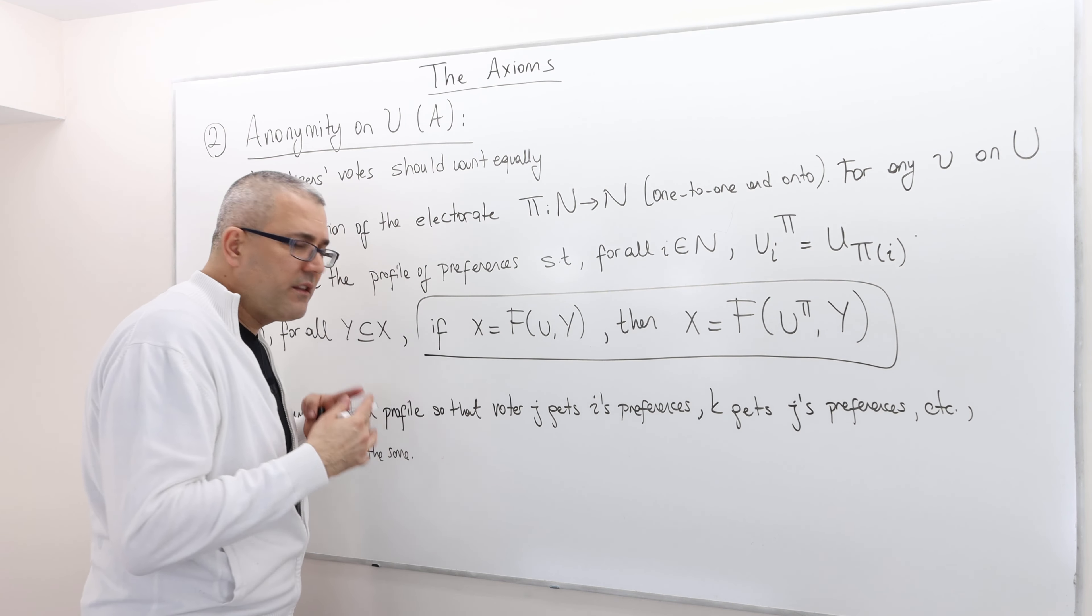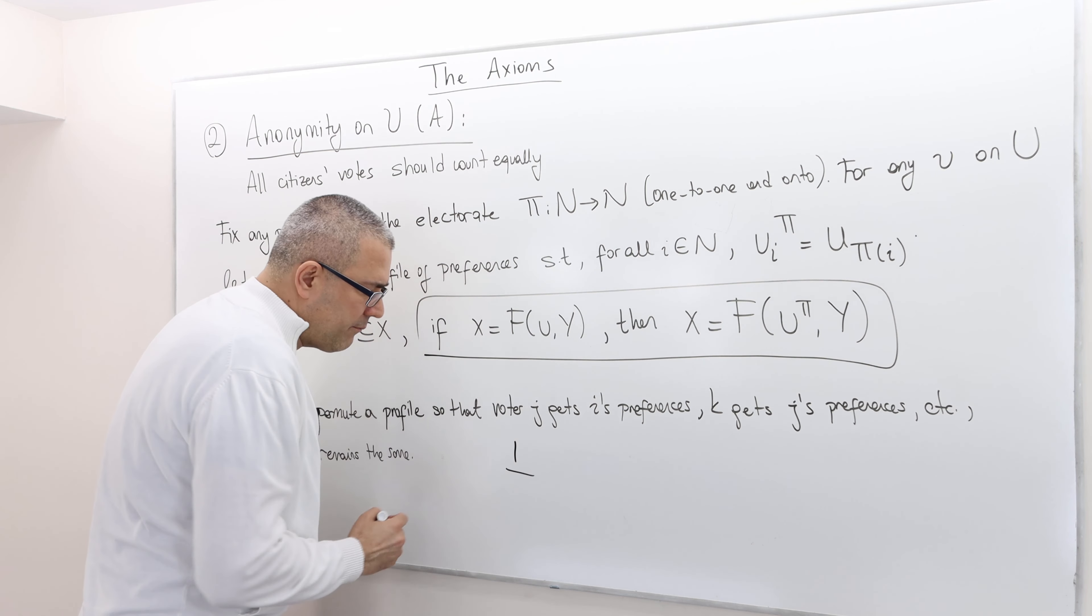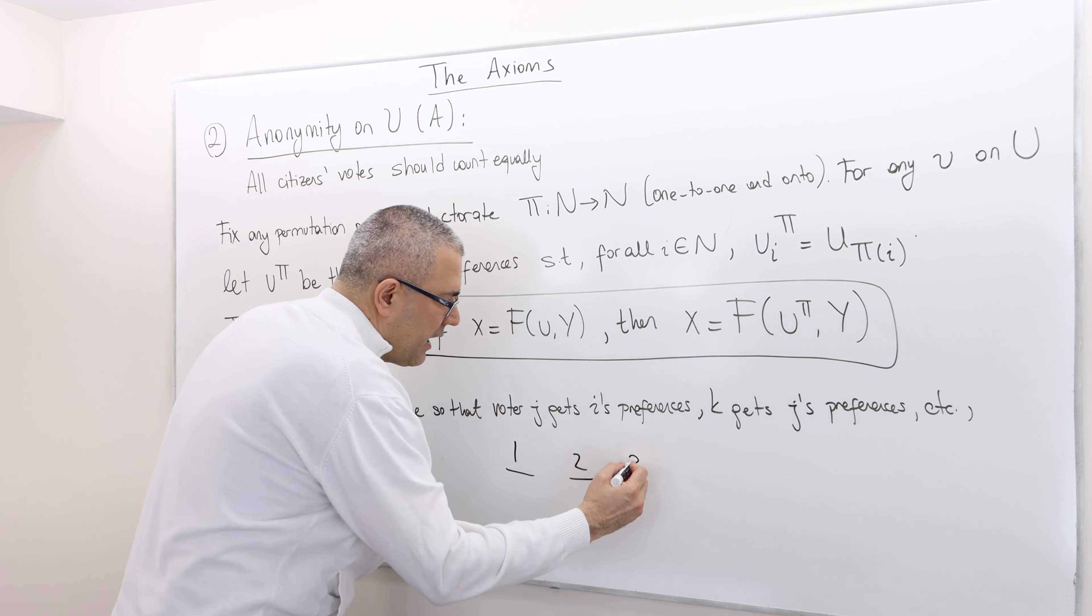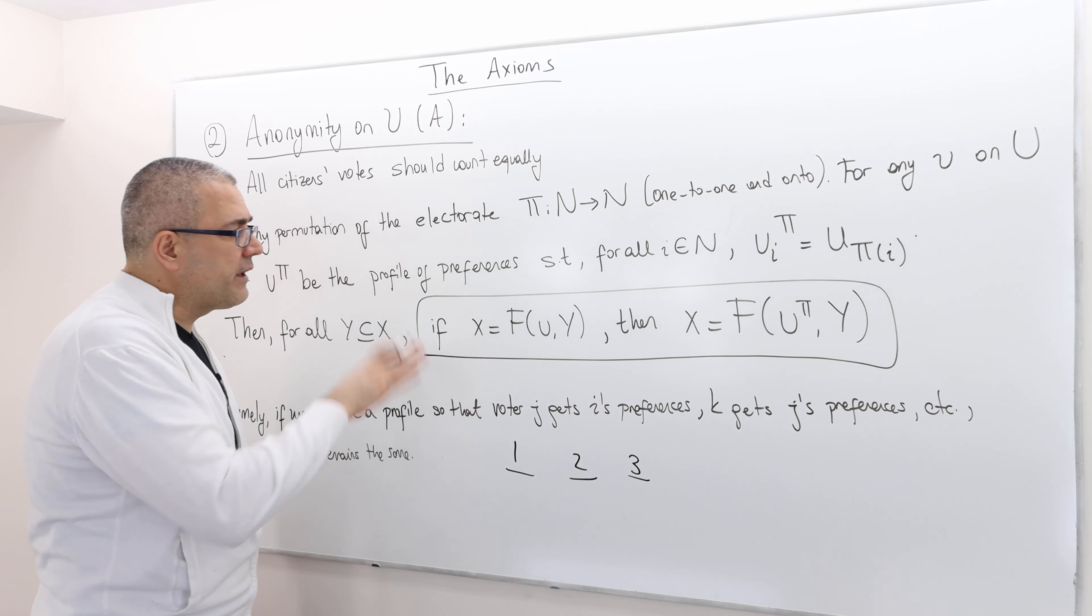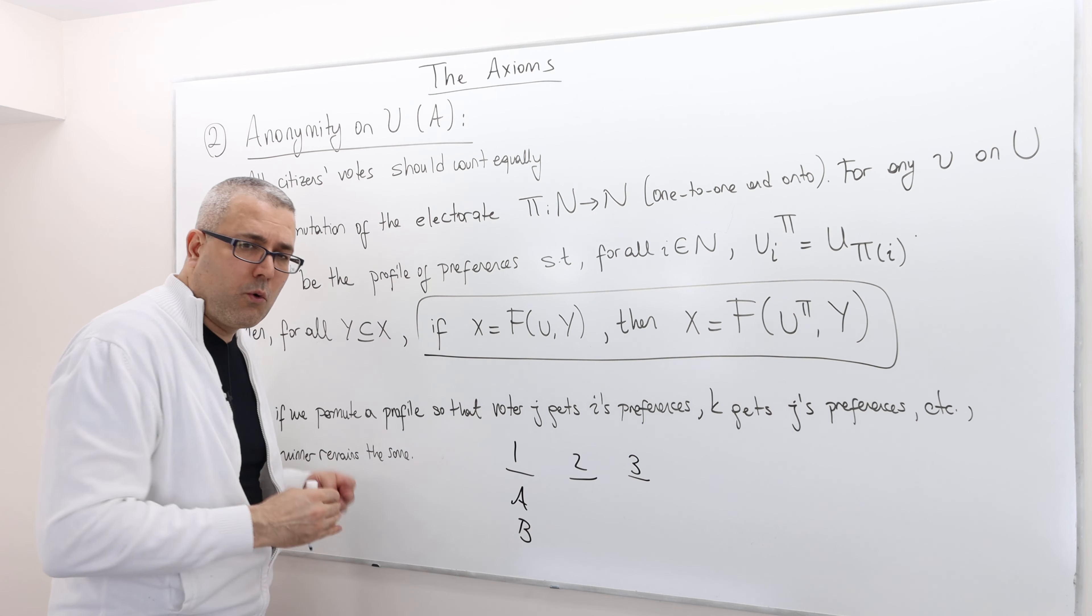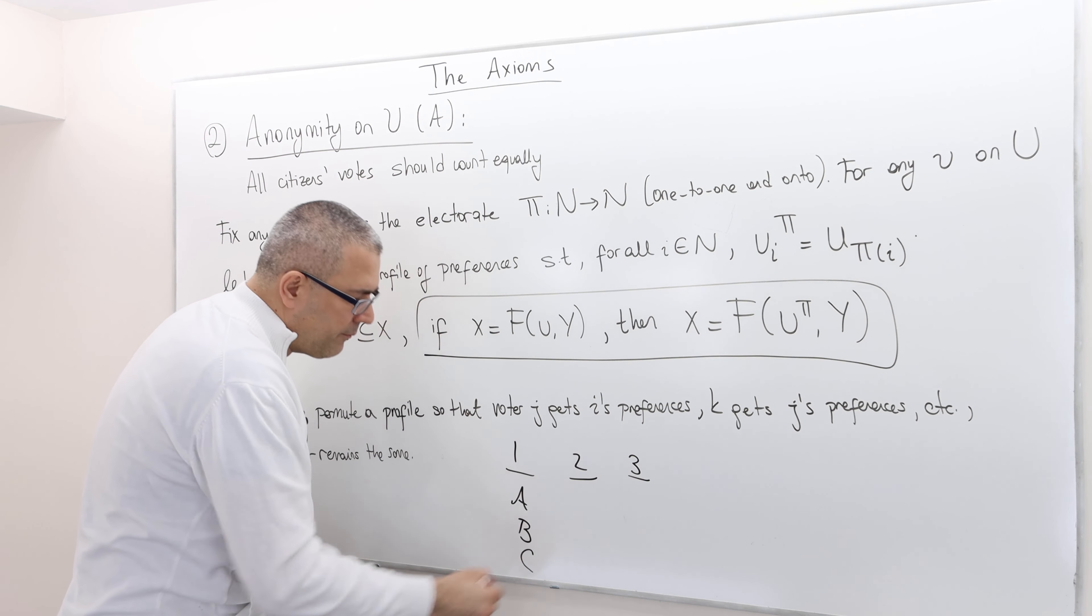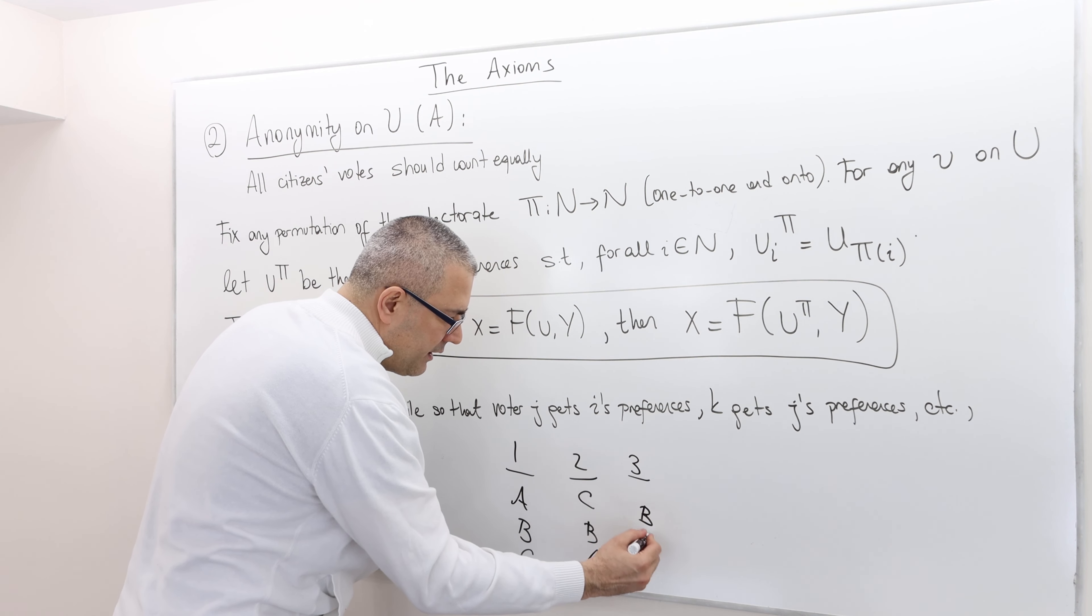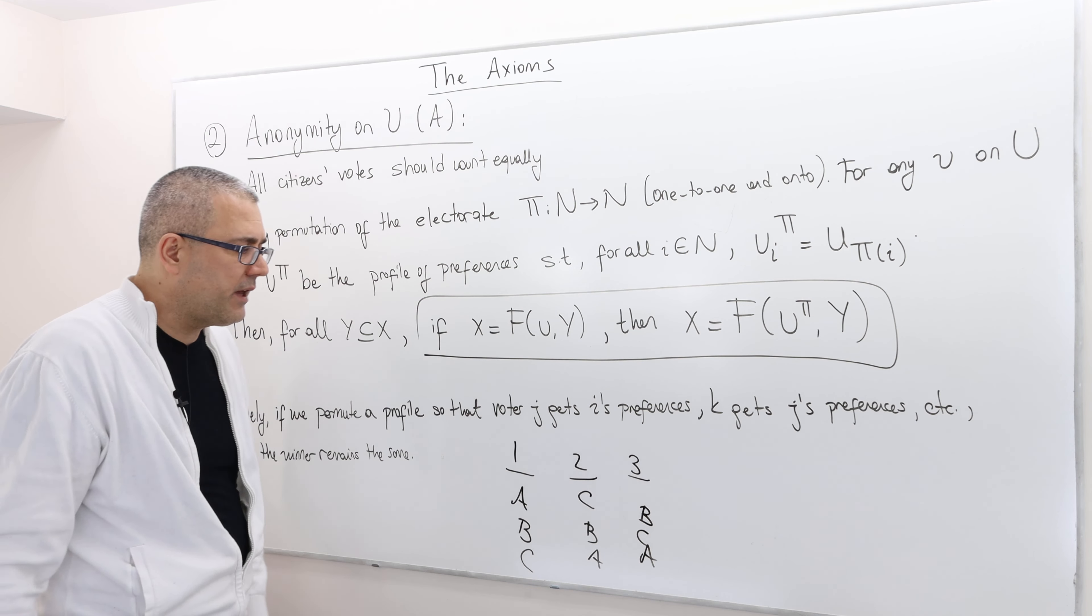Let's suppose I have three voters, voter number one, number two, all these are their name, let's suppose, and voter number three. Forget about the utility function. Here, I'm just going to focus on ordinal preferences. Agent one prefers a, b to c, two prefers c, b to a, and then three prefers b, c to a.